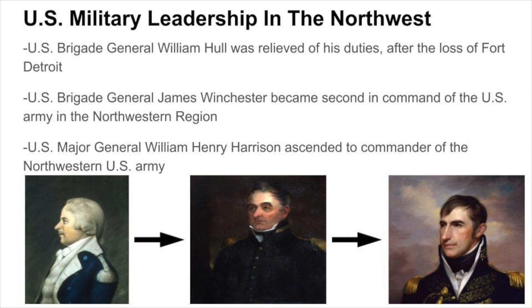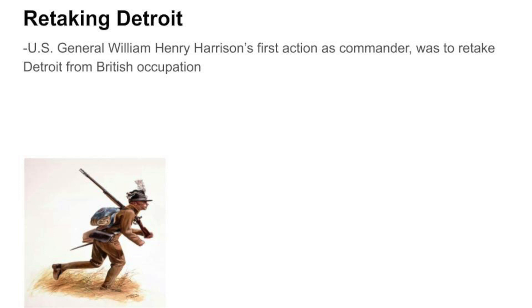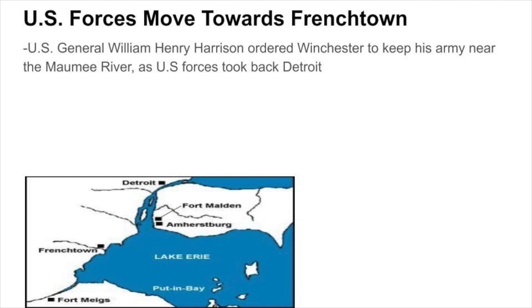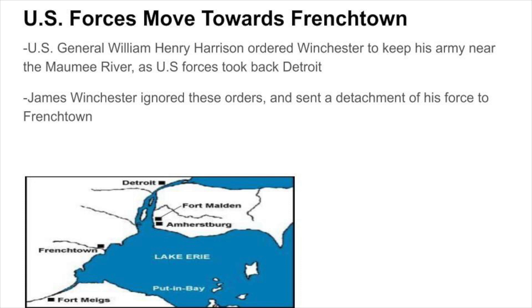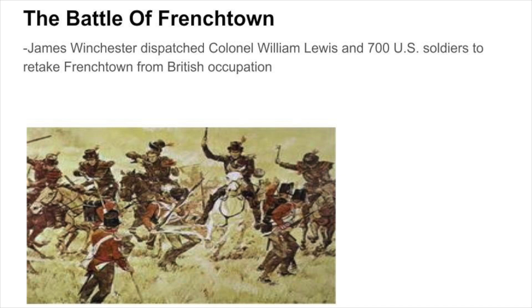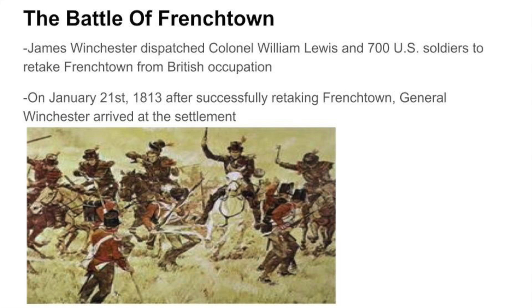Harrison's first action as commander was to retake Detroit. In order to do this, he divided his army into two columns — Harrison would lead one column, while Winchester would lead the other. Harrison had given orders to Winchester to remain near the Maumee River as U.S. forces moved in to take back Detroit. However, Winchester ignored these orders and sent a detachment of his own force to Frenchtown, after being informed by local settlers about British plans to burn Frenchtown. The Battle of Frenchtown began when General Winchester dispatched Colonel William Lewis and 700 U.S. soldiers to retake Frenchtown. On January 21st, 1813, after successfully retaking Frenchtown, General Winchester arrived at the settlement.